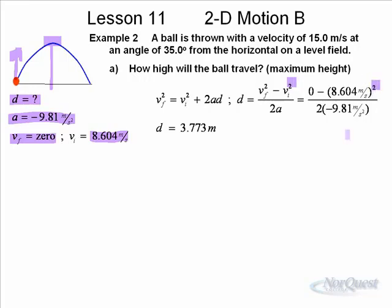Zero minus 8.604 squared divided by two times the acceleration of gravity gives you a displacement of 3.73 meters. It's positive because it's up. There's your maximum height.